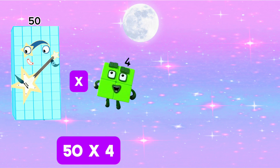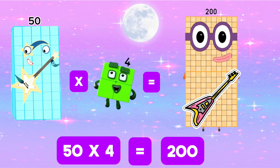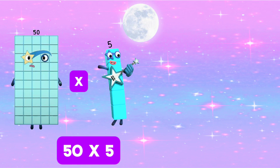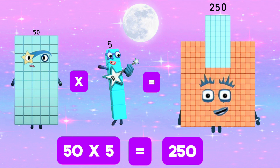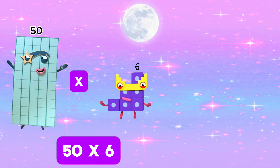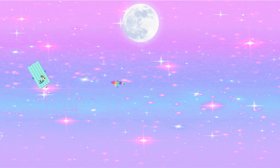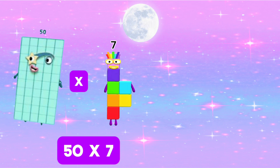50 times 4 is equals 200. 50 times 5 is equals 250. 50 times 6 is equals 300.